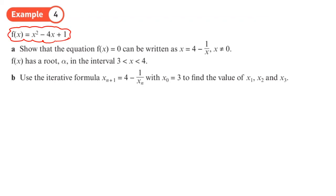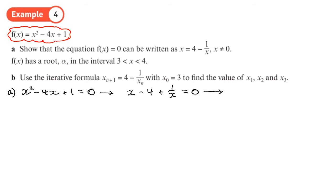Here we have a nice simple function: x squared minus 4x plus 1. The equation f of x can be written in a form with x as the subject. The first thing we need to do is write it as f of x equals zero: x squared minus 4x plus 1 equals zero. Then we divide everything through by x, giving us x minus 4 plus 1 over x equals zero. Then taking the 4 and the 1 over x to the other side, we're done.